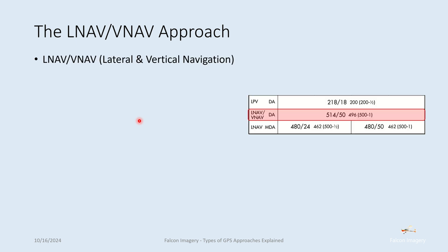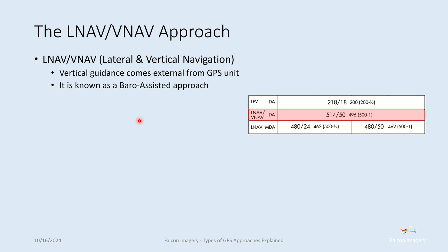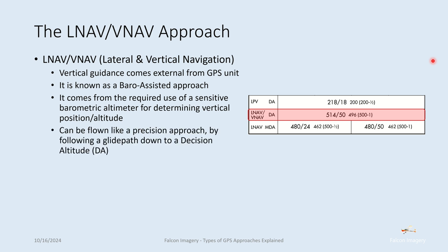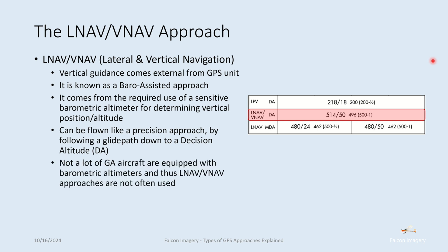Next, we have LNAV/VNAV approaches, which stand for lateral and vertical navigation. The vertical guidance comes external from the GPS unit in the aircraft — this is known as a baro-assisted approach, requiring the use of a sensitive barometric altimeter for determining vertical position and altitude. It can be flown like a precision approach by following a glide path down to a decision altitude. Not many small GA aircraft, especially training aircraft, are equipped with the required barometric altimeters, so LNAV/VNAV approaches are not often used in those types of aircraft.